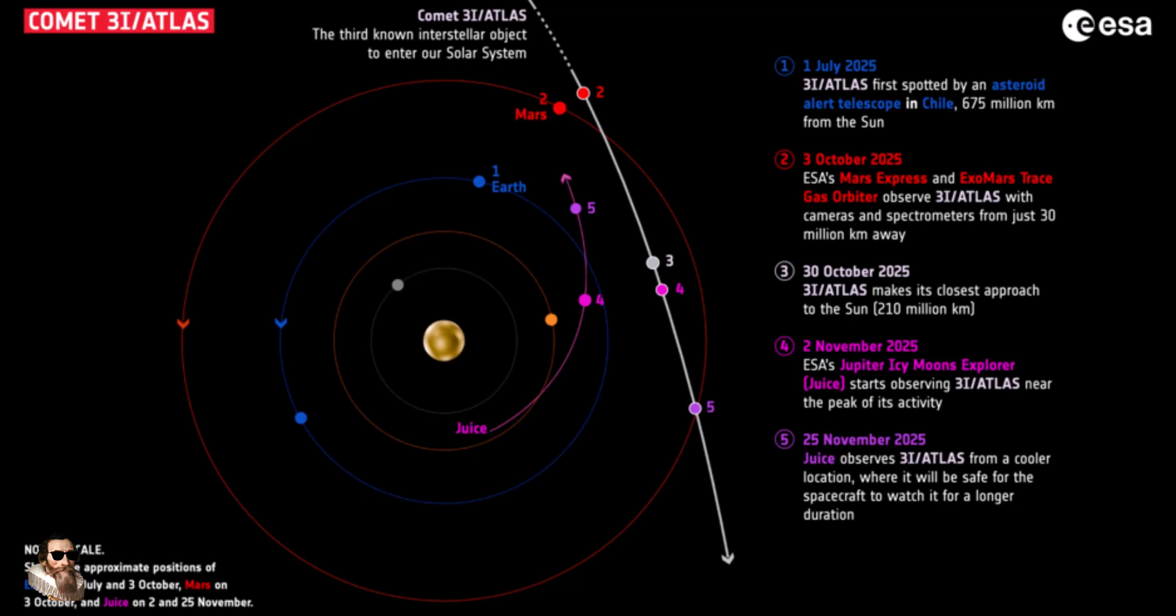In the vast cosmic stage where comets and asteroids drift through the solar system as silent messengers of time, the interstellar visitor 3I Atlas arrived like a wild card.